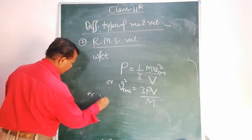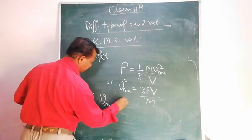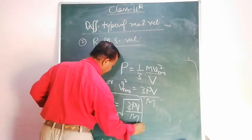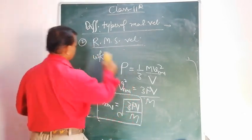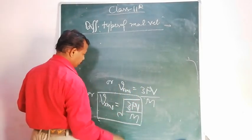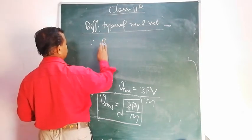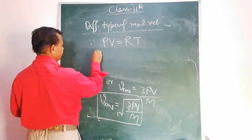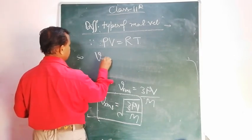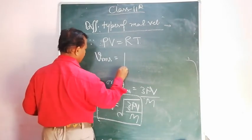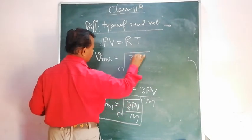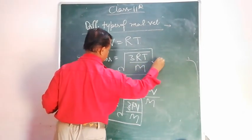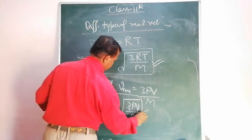Since PV equals RT for one mole of gas, substituting this value, the root mean square velocity of molecules equals the square root of 3RT upon M. This is the root mean square velocity, and this expression also gives the root mean square velocity of the molecules.